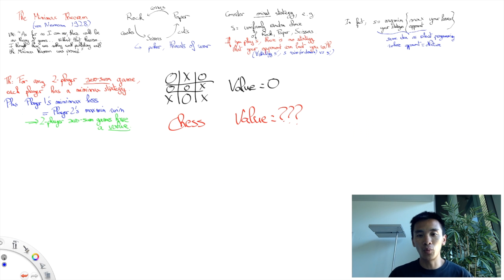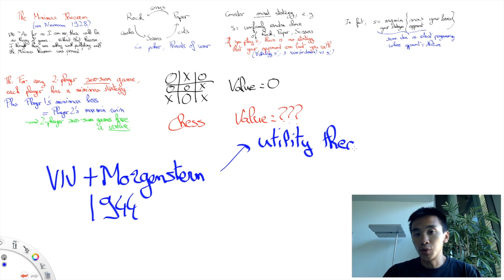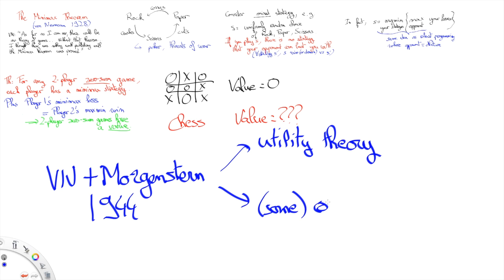It should be noted that von Neumann himself, with the help of Oscar Morgenstern, would further formalize game theory in 1944, including by introducing the utility theory, also referred to as the von Neumann-Morgenstern axioms, and basic ideas of cooperative game theory.